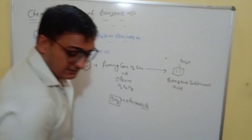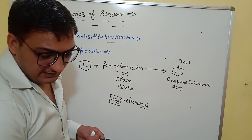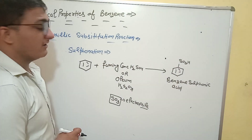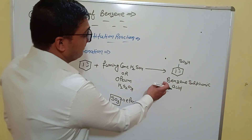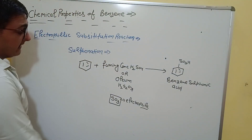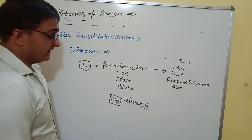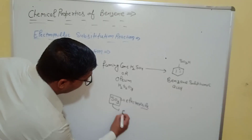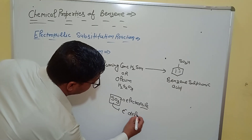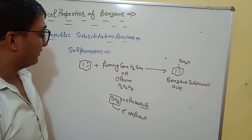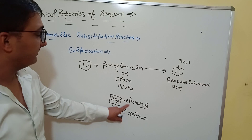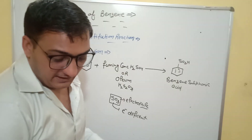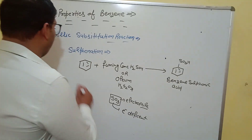In this reaction, when benzene reacts with fuming sulfuric acid or oleum, there is formation of benzene sulfonic acid. It is an electrophilic substitution reaction, and here the generated electrophile is SO3. SO3 is electron deficient — electron deficient species are electrophiles. Due to generation of this electrophile, benzene reacts with SO3 to form benzene sulfonic acid.